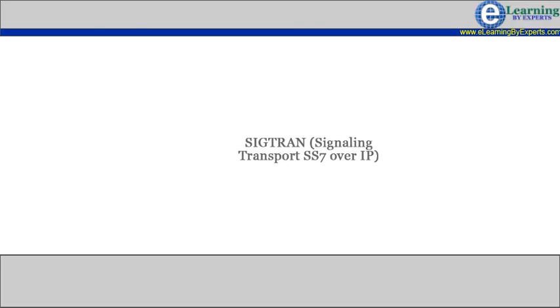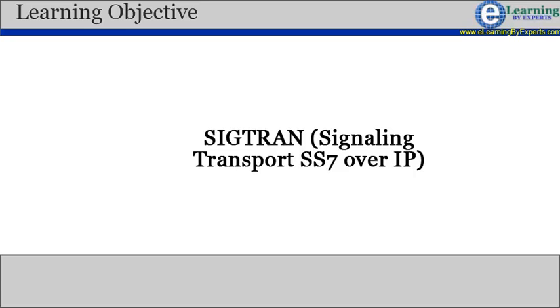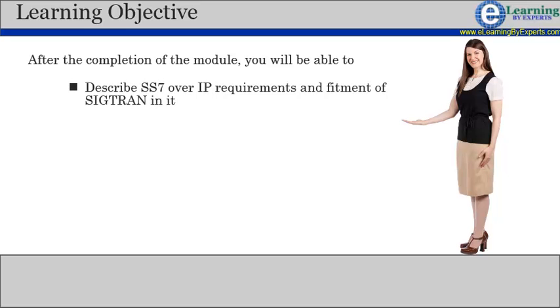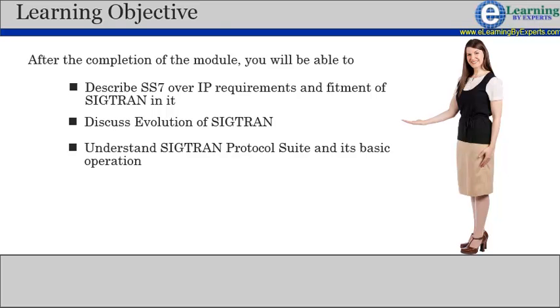SIGTRAN is a set of specifications for a family of protocols that provide reliable datagram service and user layer adaptations for SS7 and ISDN communications protocols. The SIGTRAN protocols are an extension of the SS7 protocol family. After the completion of this module, you will be able to describe SS7 over IP requirements and the fitment of SIGTRAN in it, discuss the evolution of SIGTRAN, and understand the SIGTRAN protocol suite and its basic operation.